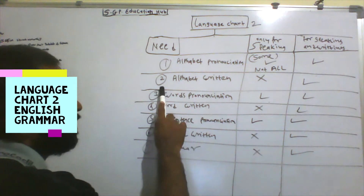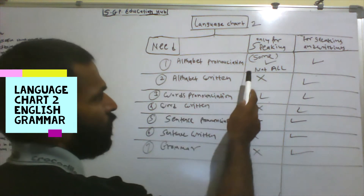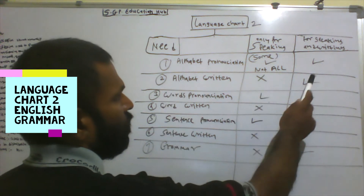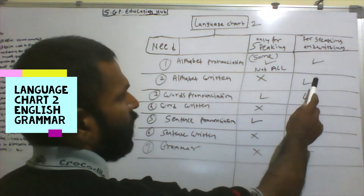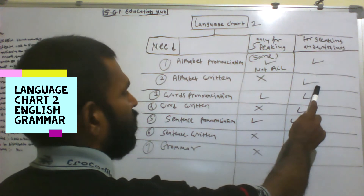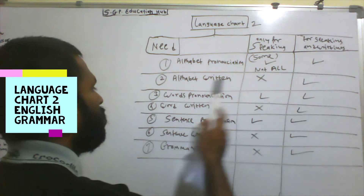The second point is alphabet written. For speaking only, there is no need to write the alphabet. But for speaking and writing combined, writing all alphabets is important.